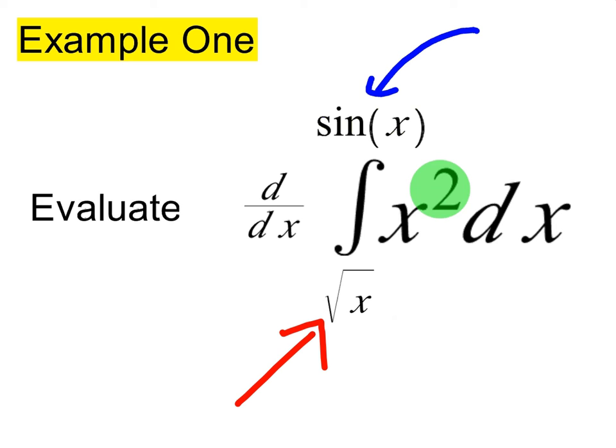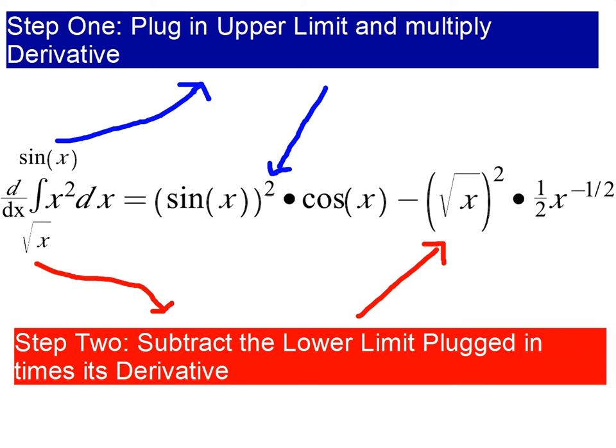Let's go over the steps. I like going over steps because they always get to the right answer. Step one is to plug in the upper limit and multiply by its derivative.